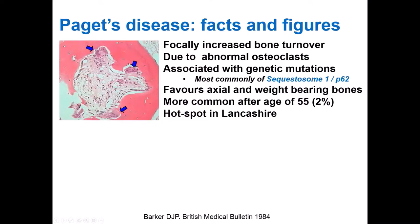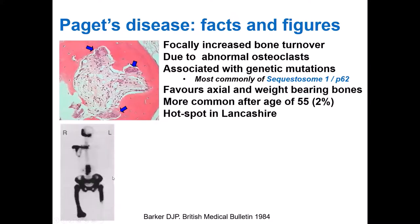We can also see the osteoclasts in real life. This is a tissue biopsy taken from a patient with Paget's disease. These are the osteoclasts, as indicated by the blue arrows, and they dig into the bone, seen here in pink. Paget's disease is associated with genetic mutations, most commonly of the gene called sequestosome-1 or P62, and these mutations activate osteoclasts. It favours the axial and weight-bearing bones, as seen on isotope bone scan with increased uptake in the vertebrae, pelvis, femur, skull, and right shoulder blade.